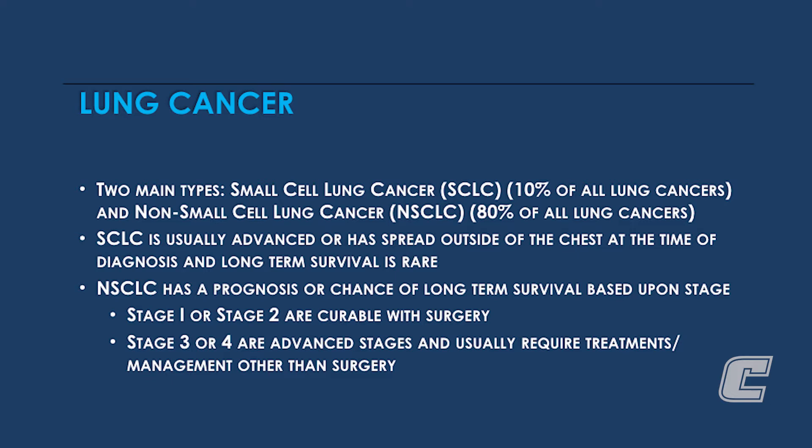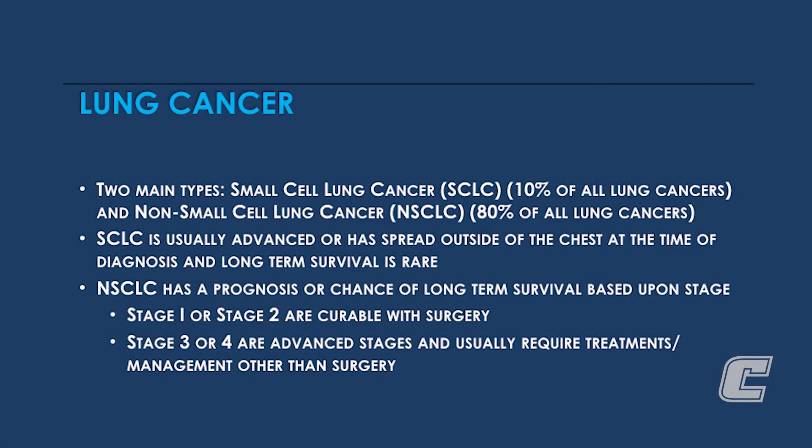Small cell lung cancer is usually advanced at the time of diagnosis and has already spread beyond the chest. The prognosis of lung cancer in general is dependent upon the stage at the time of diagnosis. Stage 1 and 2 have the best prognosis, and stage 3 and 4 are advanced forms of lung cancer.